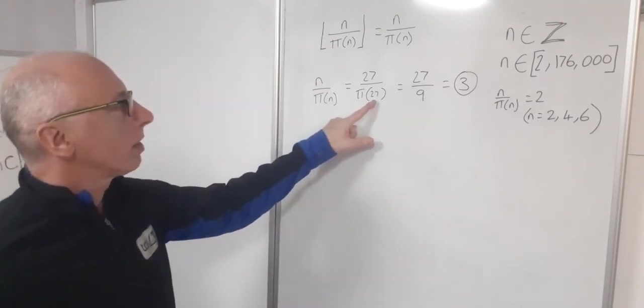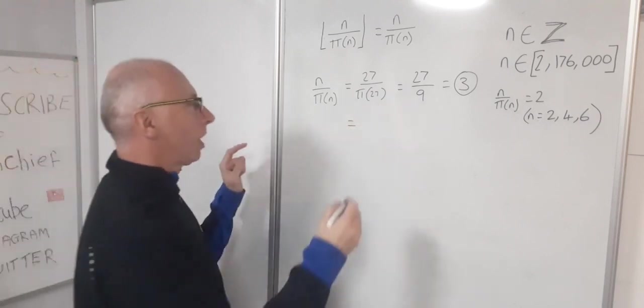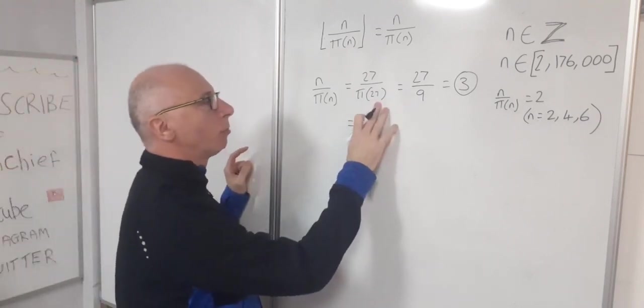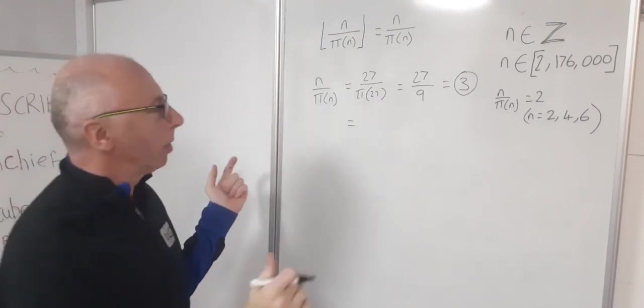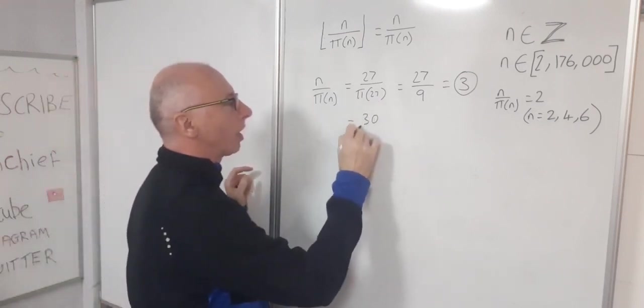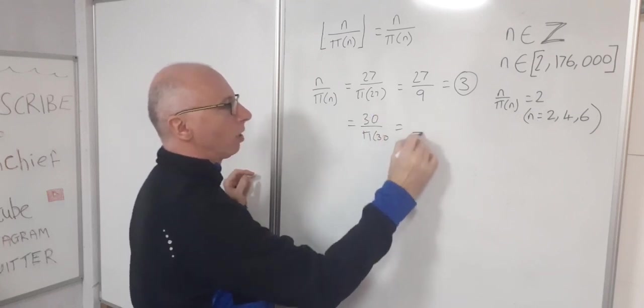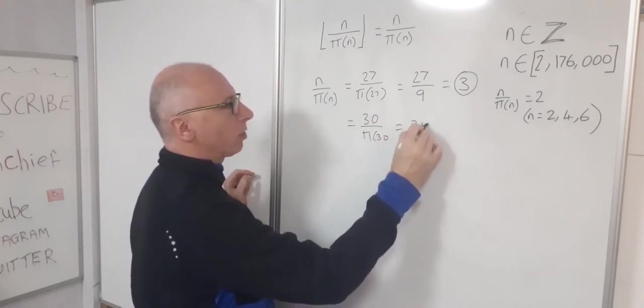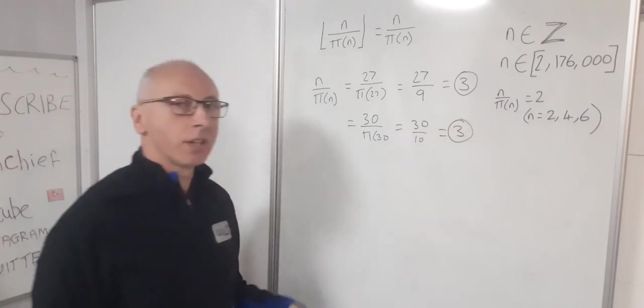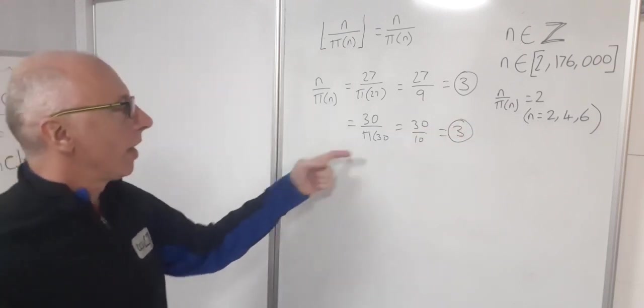So 28 is not, 29 is, so we know we can now go 29 is, but we also know that 30 is not a prime number. So therefore 30 over pi of 30, because we found one more, we can now divide by 10 and use 30. So that's another example for 3. And then